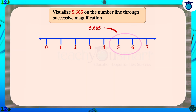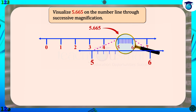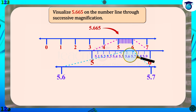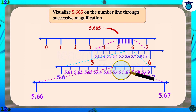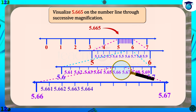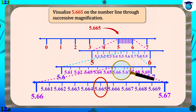Thus the visualization of 5.665 on the number line using a magnifying glass is as follows. In these two examples, we saw the terminating decimals.